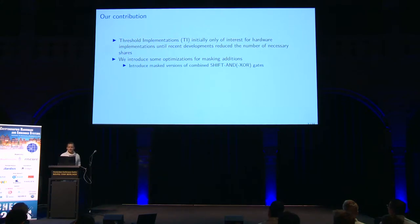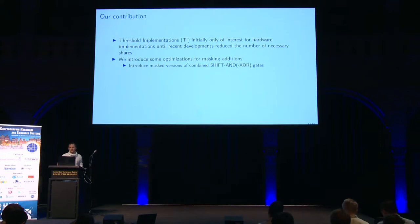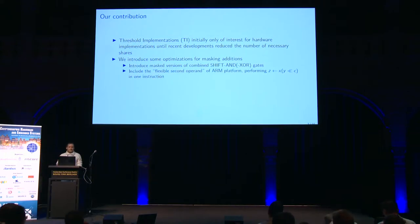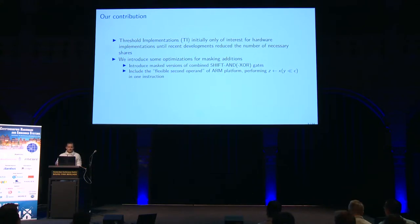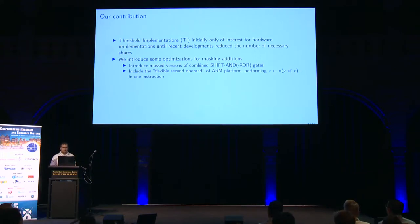The first optimization introduces masked versions of combined gates, or combined gadgets, which perform a shift, an AND, and optionally also an XOR in one step. These combined gates allow us to use the flexible second operand of the ARM platform, which will perform an operation including a shift in one single instruction, and usually in a single cycle.